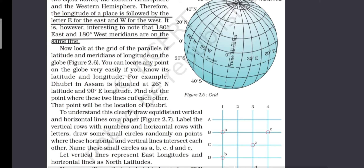The location of Assam is given to us: Assam is located at 26 degrees north latitude and 90 degrees east longitude. This is the exact location of Assam, and we came to know about it because we had the knowledge of both latitude as well as longitude.